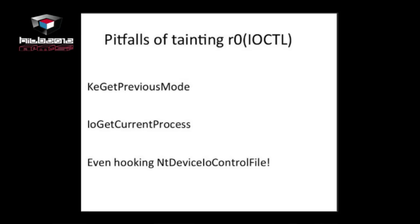About pitfalls of taint analysis in kernel land: taint information can be lost when checking system variables that you don't control — for example, the previous mode, which indicates whether code comes from kernel or user land. It's a variable of the process state and you haven't tainted it, so you see nothing. Another pitfall is a defense mechanism: because tainting is very slow with great performance overhead, if some process does something in graphics, it just blue screens, so you get nothing.